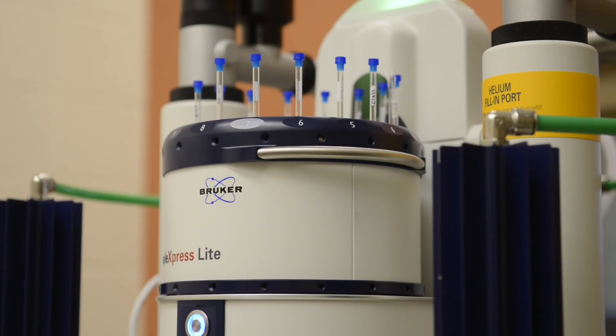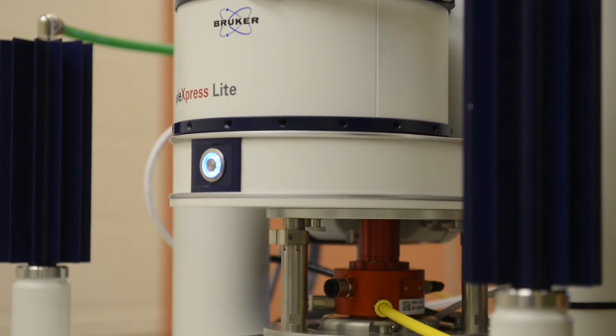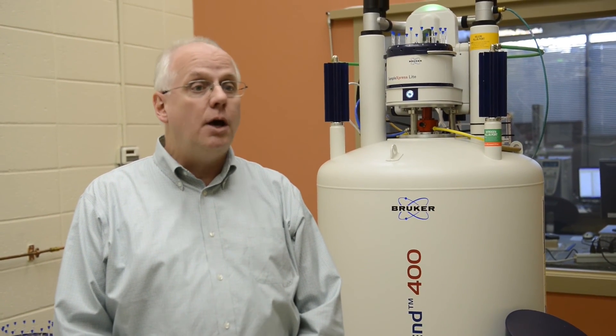This is a 400 megahertz nuclear magnetic resonance spectrometer. It is one of the most important pieces of equipment that a chemist can use to probe matter. This particular instrument gives us information about molecular structure of compounds that contain carbon.